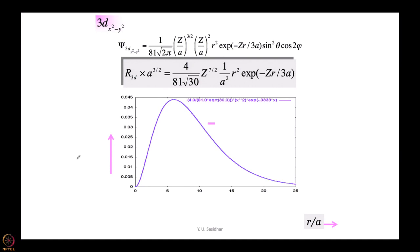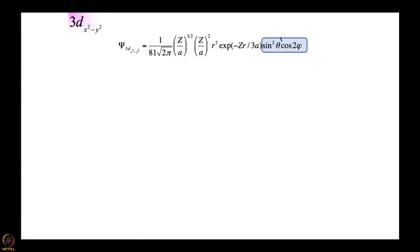With that background, let us come back and see what a plot of 3D x square minus y square would look like. This is what we have: we have a constant multiplied by r square multiplied by e to the power minus zr by 3a multiplied by sin square theta cos 2 phi. This is the angular part. Let us worry about the radial part to start with. The radial part again goes through a maximum - when r equal to 0 it is 0, r equal to infinity it is again 0, and in the middle the product would go through a maximum. Let us have a look at the angular part of 3D x square minus y square. So what we have there is sin square theta multiplied by cos 2 phi.